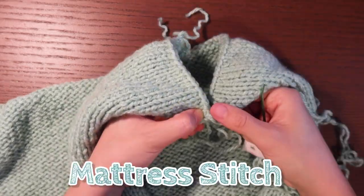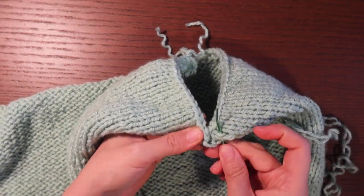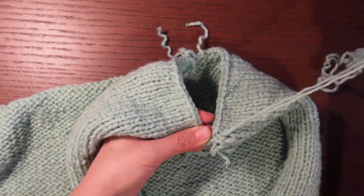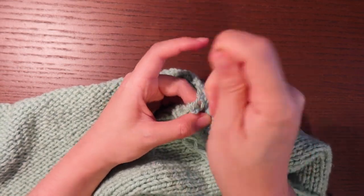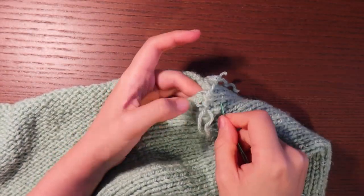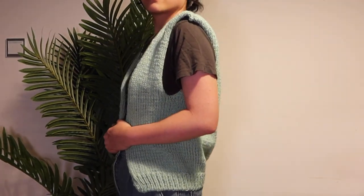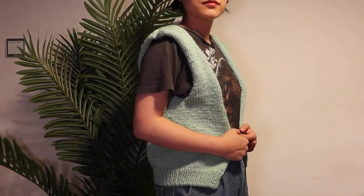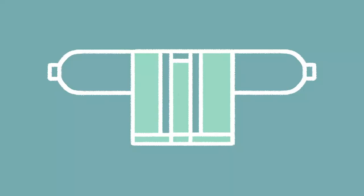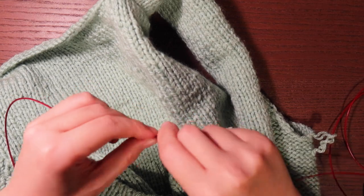Knit the three sections separately upward, then seam the shoulders together. The seaming method is called Mattress Stitch — you pass through one stitch on each side in an alternating pattern. After seaming, I tried it on and it was already looking like a real sweater! But just as I was feeling happy, I suddenly realized my yarn might not be enough.